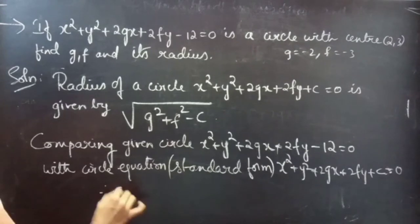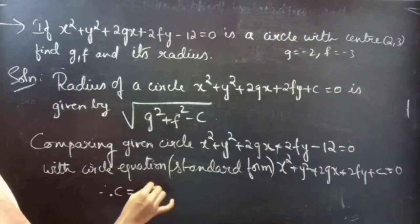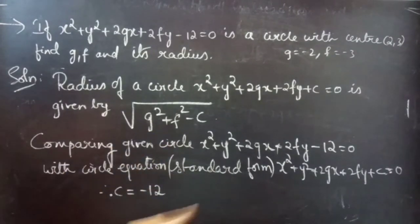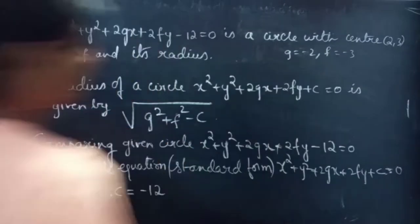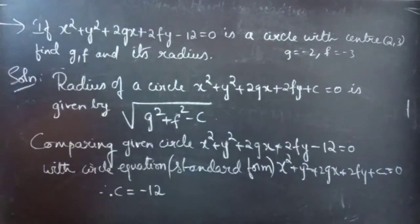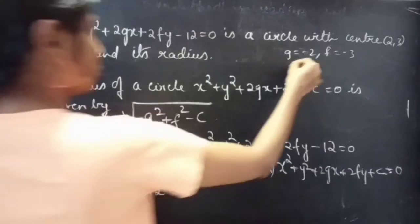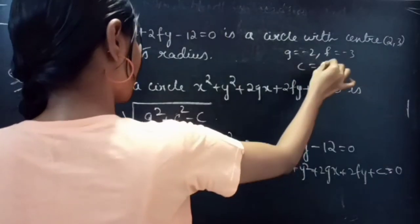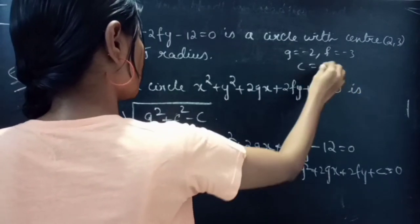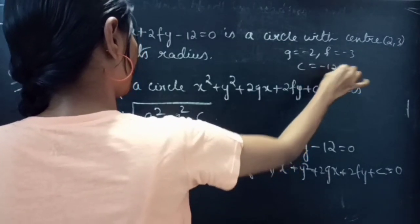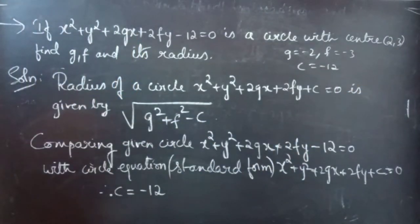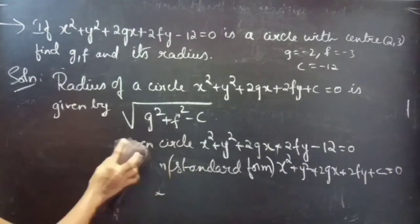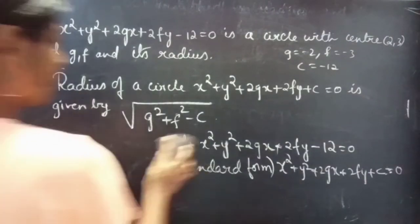Therefore, c equals to minus 12 by equating the constants. So we have c equals to minus 12. Now we can find the value of radius using the formula.